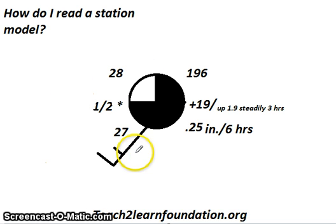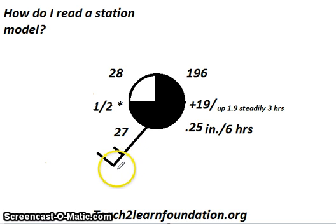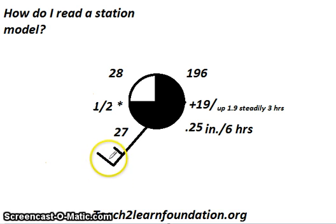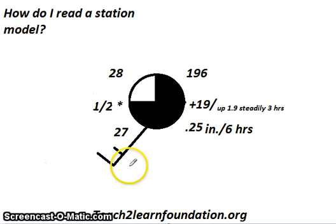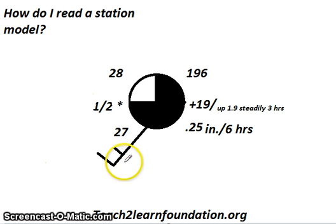The flags on the tail indicate the wind speed. The longer tail represents a wind speed of 10 knots, whereas the shorter tail represents a wind speed of 5 knots, and added together this will get you a total wind speed of 15 knots.